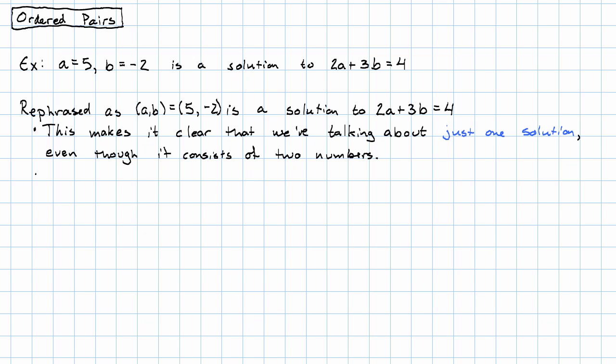In this problem, the pair (5, negative 2) is called an ordered pair. Why ordered? Well, because it's important that the 5 comes first and the negative 2 comes second.